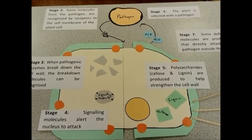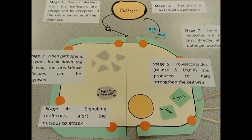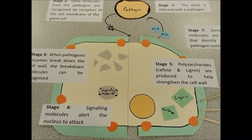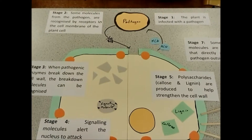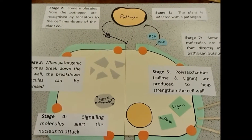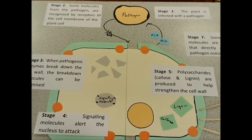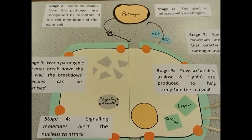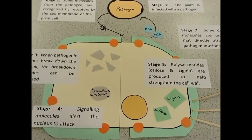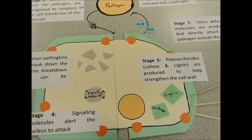Plant defences. Plants do not have an active immune system, but individual cells defend themselves from pathogens in a number of ways. This can be split up into seven distinct stages.